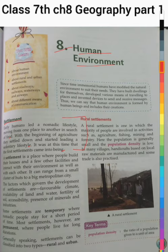Early humans previously used to live a nomadic life, moving from one place to another in search of food. But as they started agriculture, they started living a sedentary lifestyle. They built their homes and huts and started living there only. It was the first time the first settlement came into being. A settlement is a place where people build their houses and a few other facilities and interact with the environment as well as with each other. It can range from a small cluster of herds to a big metropolitan city.